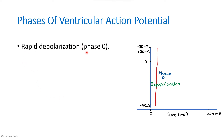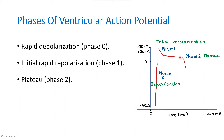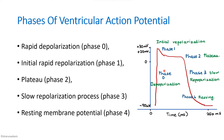Phase 0 is rapid depolarization, during which the potential shoots up from minus 90 to around plus 30 millivolts. Phase 1 is initial rapid repolarization, a small dip following depolarization. Phase 2 is the plateau phase, where potential remains constant. Phase 3 is slow repolarization, where potential returns near resting level. Phase 4 is the resting membrane potential. So there are five phases: 0, 1, 2, 3, and 4.